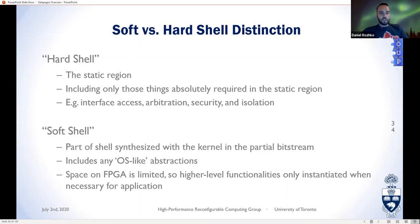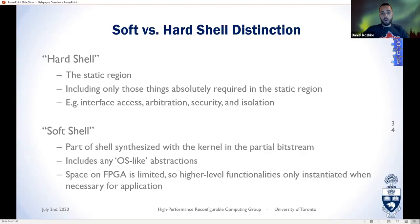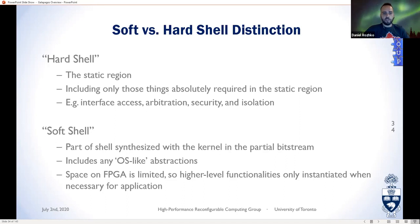We distinguish between a hard shell and a soft shell. The hard shell is the static region in a PR flow — it includes only what is absolutely required: interface access, arbitration, security, isolation, PR control logic. Things not required in the static region are pushed into the partial bitstream, so portions of the shell can be synthesized together with your application or kernel. This is where we include OS-like abstractions. The logic is that space on the FPGA is limited, so higher-level functionalities are instantiated only in the partial region when needed.